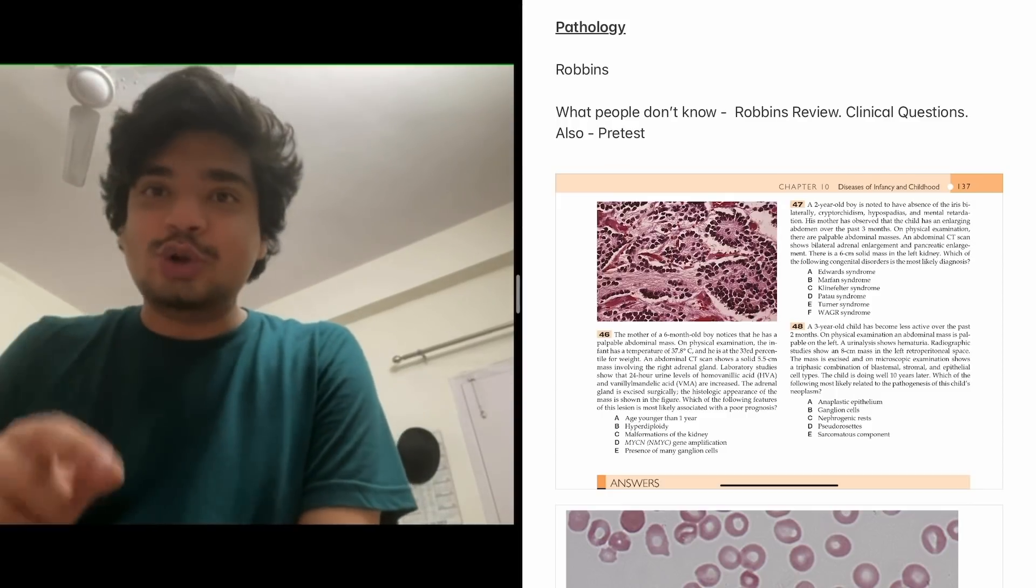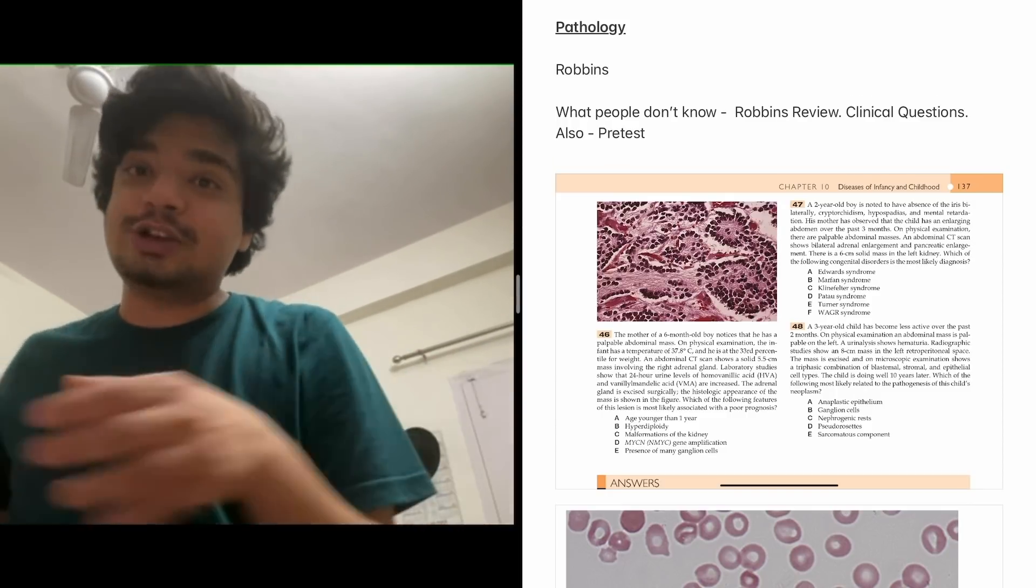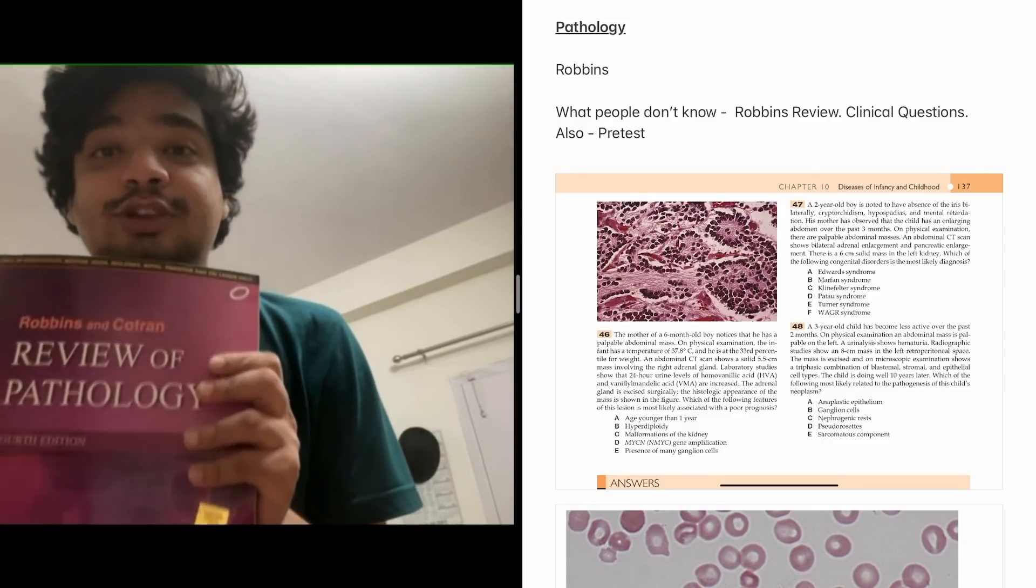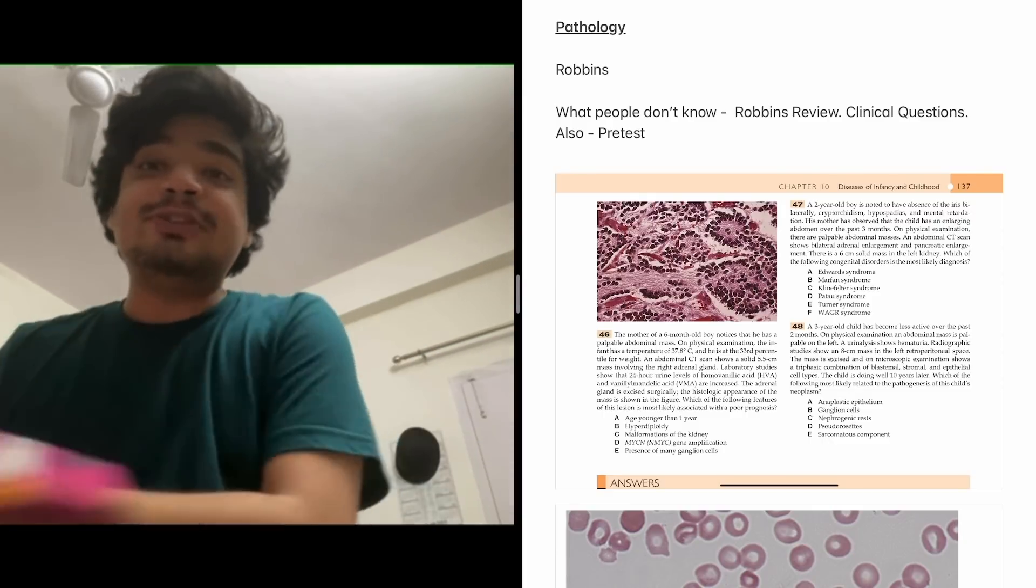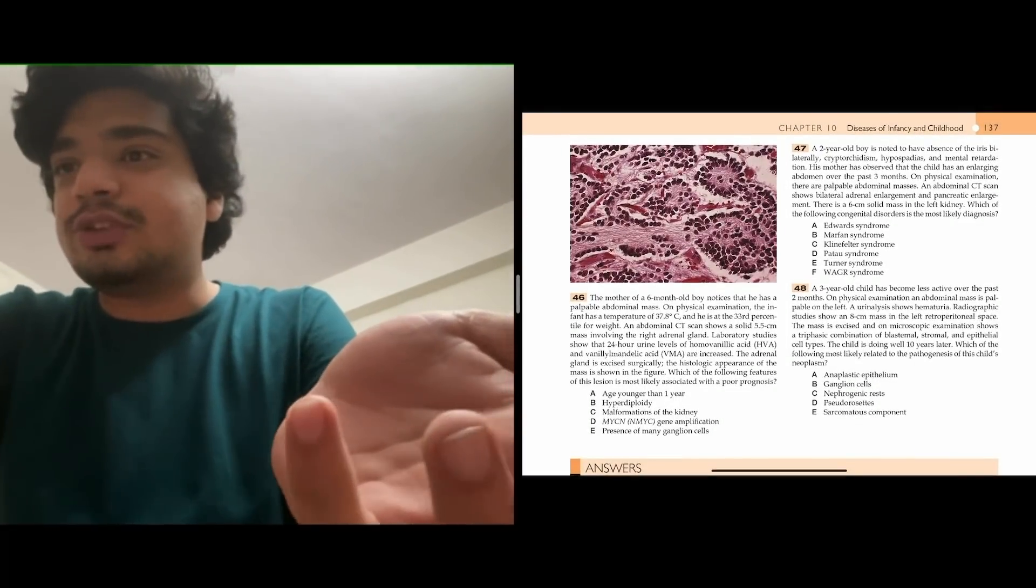What people don't know is that there's something called Robbins Review. I have that with me, I used to read Robbins Review. This is the book - Review of Pathology by Robbins and Cotran. These are sample questions from Robbins Review, diseases of infancy and childhood. I'll discuss one question with you.